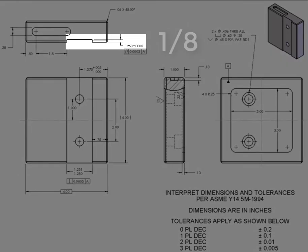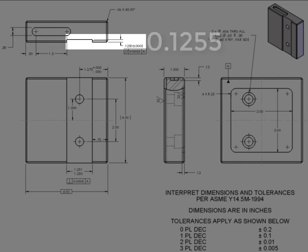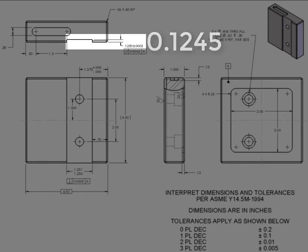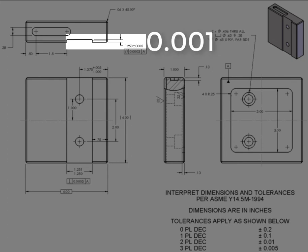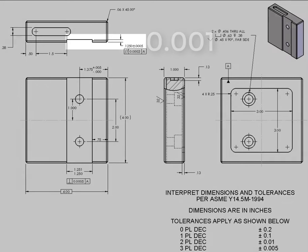The one eighths slot depth has a symmetric dimension. This feature's basic size is one eighth, and the depth of the slot may vary 0.0005 or five ten-thousandths of an inch larger or smaller than the one eighth nominal size. Thus, the maximum feature size is 0.1255 and the minimum feature size is 0.1245, giving this slot depth a total tolerance of 0.001 or one thousandths of an inch.